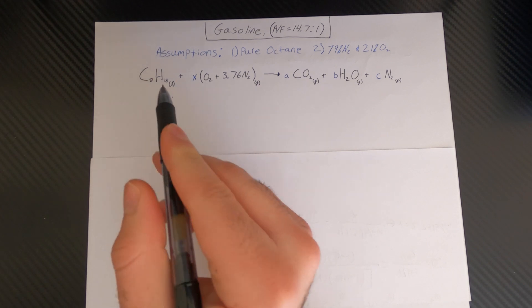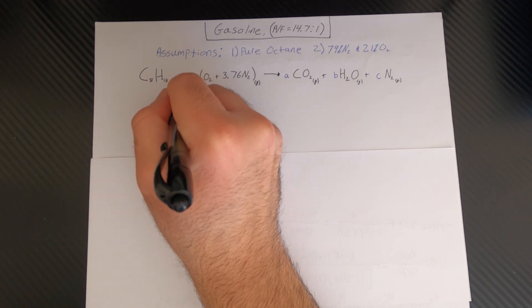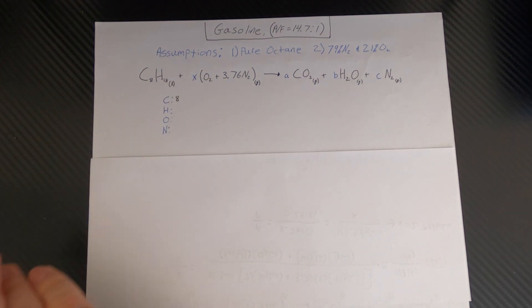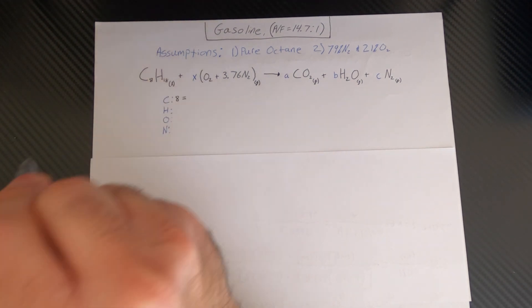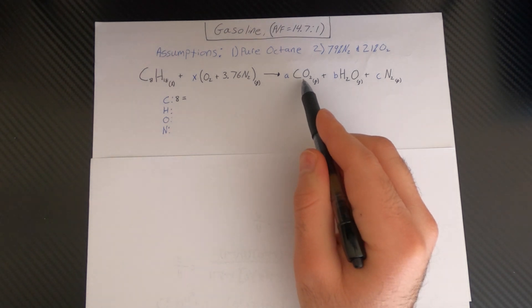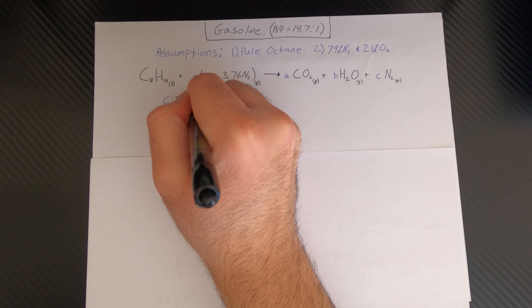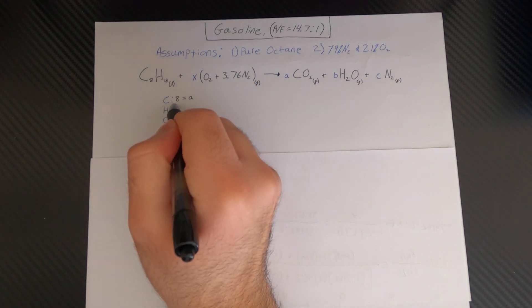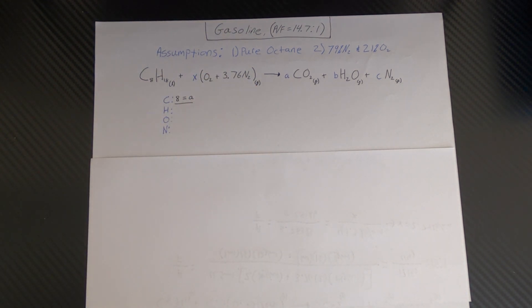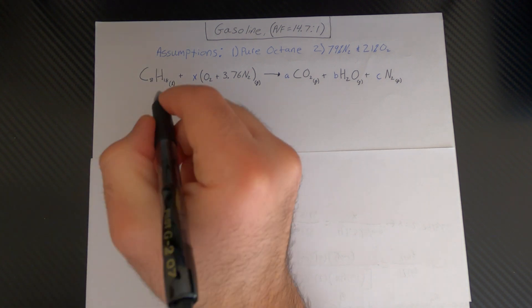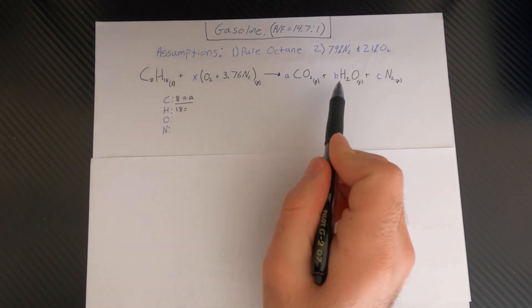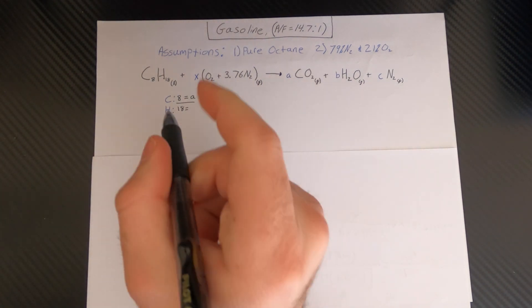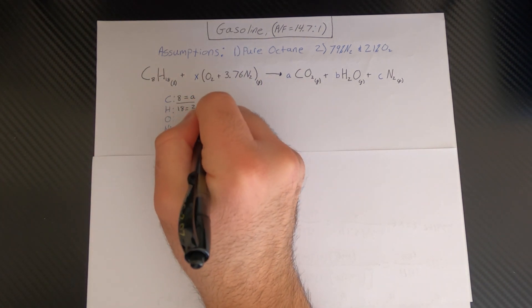So for carbon we have eight carbon, so we can say eight on the left side. The arrow you can replace with an equal sign here, and then we have one carbon here which isn't shown, so you have one times A which will give you A. So we have A is equal to 8. Then next we move on to hydrogen, and here we have 18 on the left side, and on the right side we have two times B, and then B will give us 9.